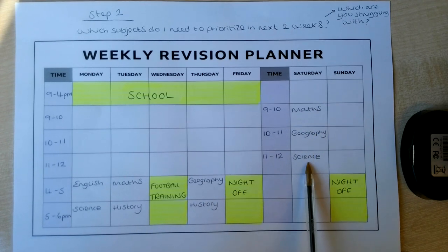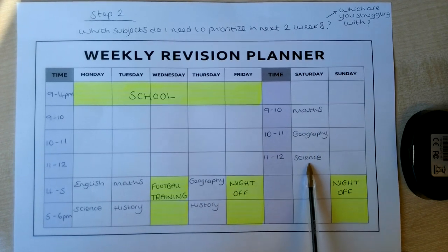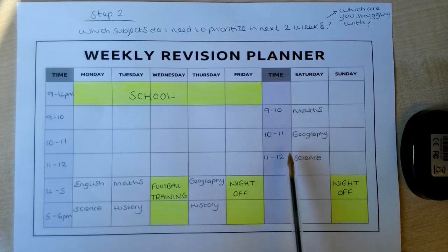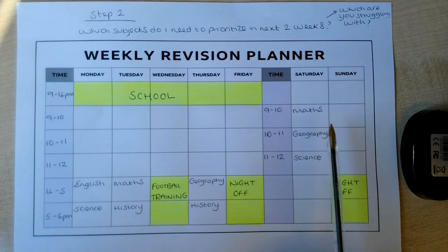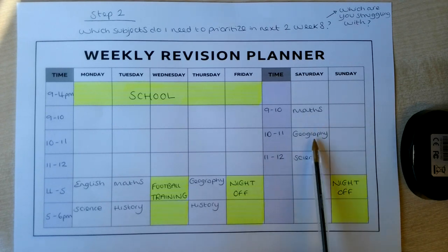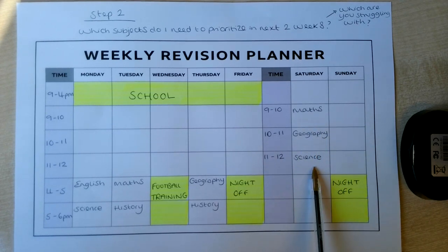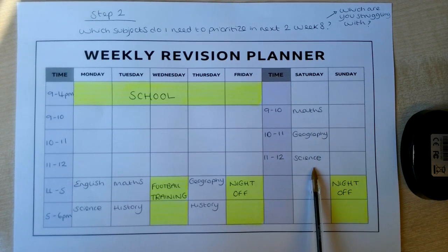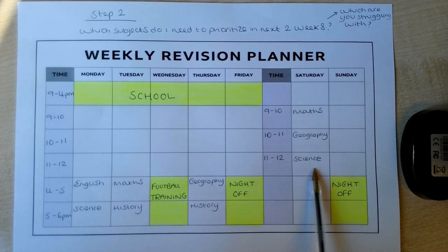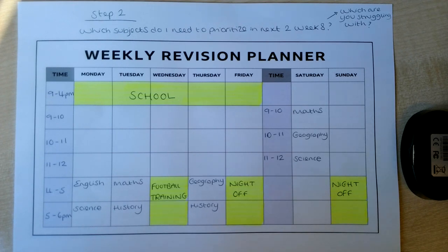On a Saturday, for example, they're going to do three hours of revision — an hour of maths, an hour of geography, and an hour of science. At this stage in the year, I'd say that's a decent, good amount of revision to be doing.